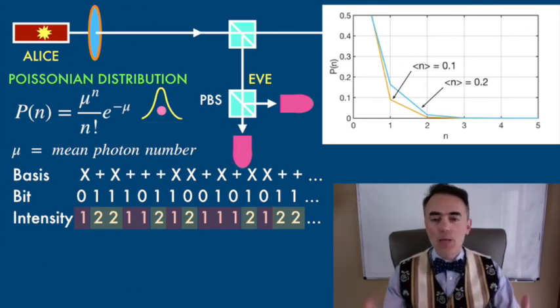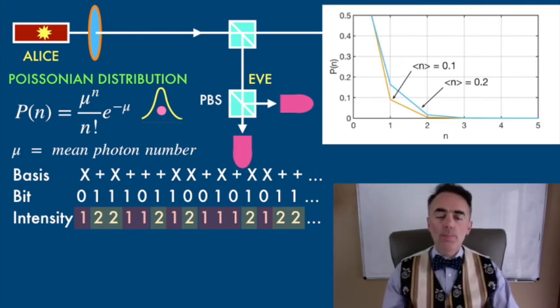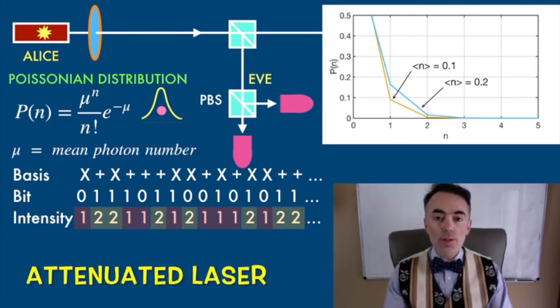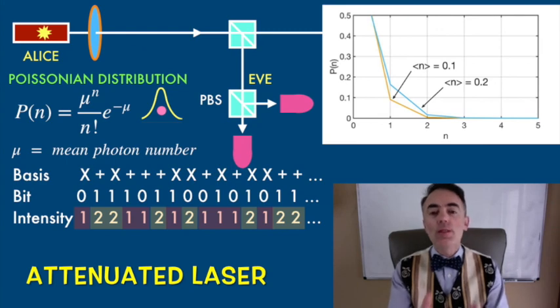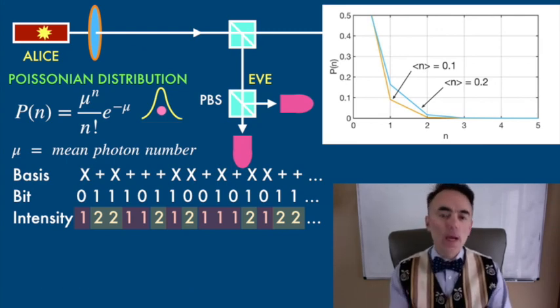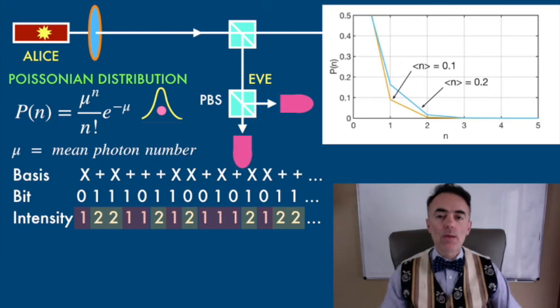And nowadays most QKD protocols, those that are using lasers as a source of photons, are using this decoy method to prevent this beam splitter attack.